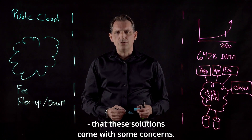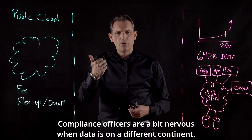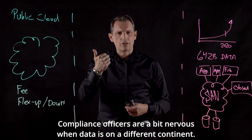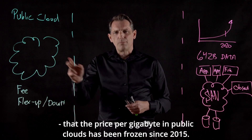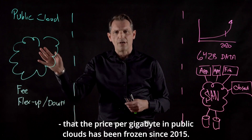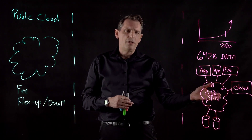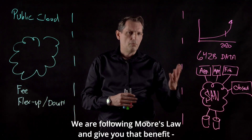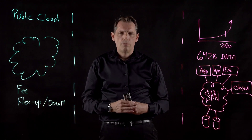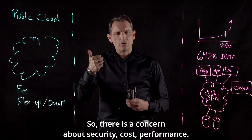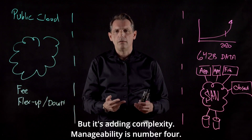We know from conversations with customers that these solutions come with some concerns. The first concern is security — compliance officers are a little nervous when data is not on the continent where they operate but maybe on a different continent, and they want to be in control of their data. On cost, the price per gigabyte in public cloud has been frozen since 2015 — it's the same gigabyte price you pay in 2021. In contrast, in the traditional data center, every two years you get twice as much capacity for your money, following Moore's law — but in public cloud that benefit is terminated. There are also concerns about performance: in some cases it doesn't perform like having it on-premises, and in other cases it's okay but it adds complexity.